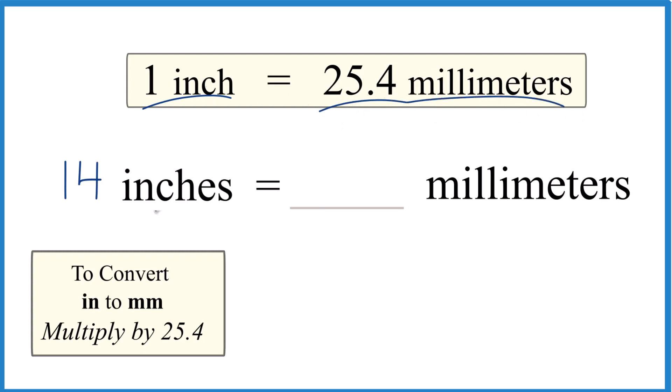So if we have 14 inches, we just have 14 times 25.4. So we take 14 inches and we multiply that times 25.4 millimeters. But remember, we have 25.4 millimeters in one inch.